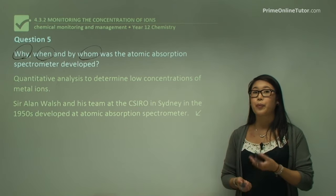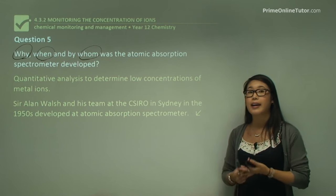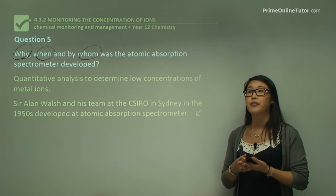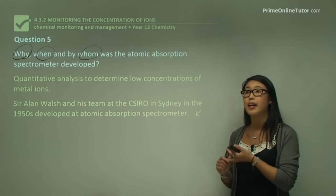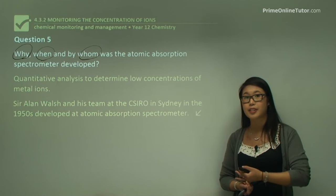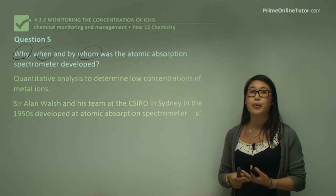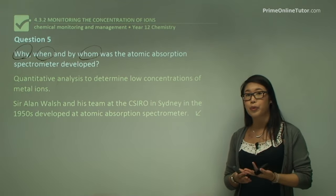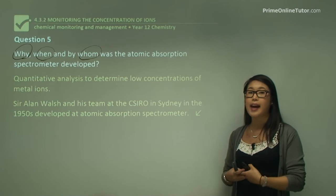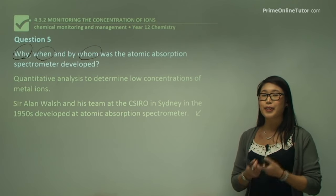In summary, we looked at AAS and how it works: light is passed through a sample, absorption occurs, and we can look at the absorption to determine the amount of metal ions in the sample. This has a variety of applications because it is sensitive and allows us to look at very low concentrations — meaning we can look at micronutrients, trace elements, and pollutants in the waterways and in the soil. In the next lesson, we'll be looking at the content of sulfate in fertilizers.